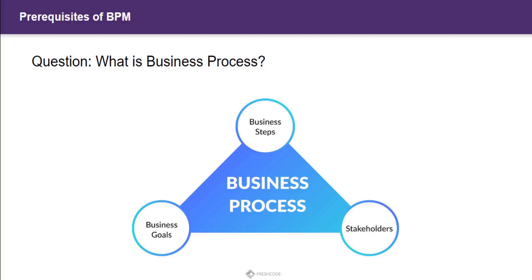Be it hiring candidates, selling your products, marketing, advertising, mentorship, or training — a business process directly affects your business model. It can bring either loss or profit to your business in the short term or long term. A business process is directly proportional to and affects your business on a day-to-day basis. Business processes are repetitive in nature.